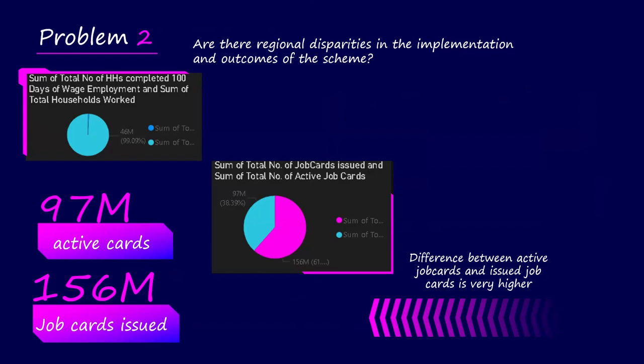There are some other factors in regional disparities. For example, you can see the total household completed and the total household worked on this scheme — their difference is very large. This pie chart shows that the total household worked is approximately 46 million, while the household that completed 100 days of wage employment is very little. Also, the difference between job cards issued and active cards is very high: 156 million job cards were issued but only 97 million are active cards.